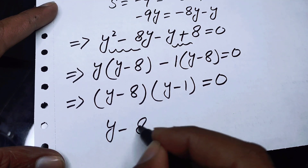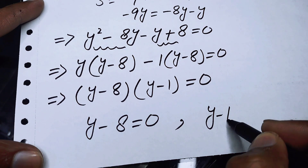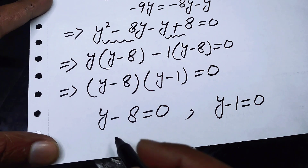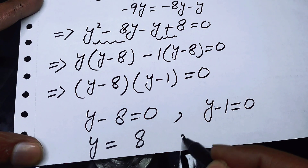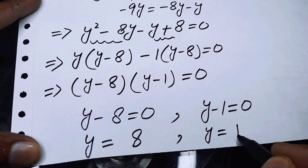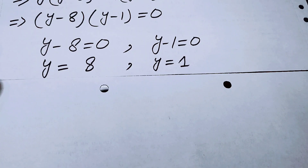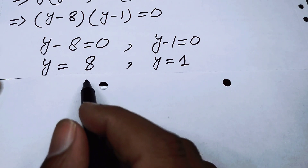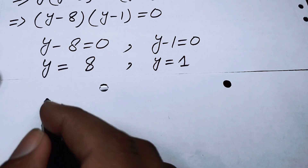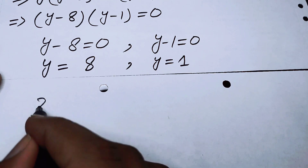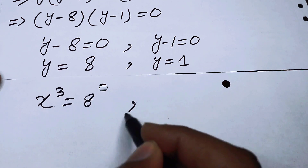Taking (y minus 8) common, we get (y minus 8)(y minus 1) equals 0. This gives two cases: y minus 8 equals 0, so y equals 8, and y minus 1 equals 0, so y equals 1. We then back-substitute y equals x cubed, giving x cubed equals 8 and x cubed equals 1.